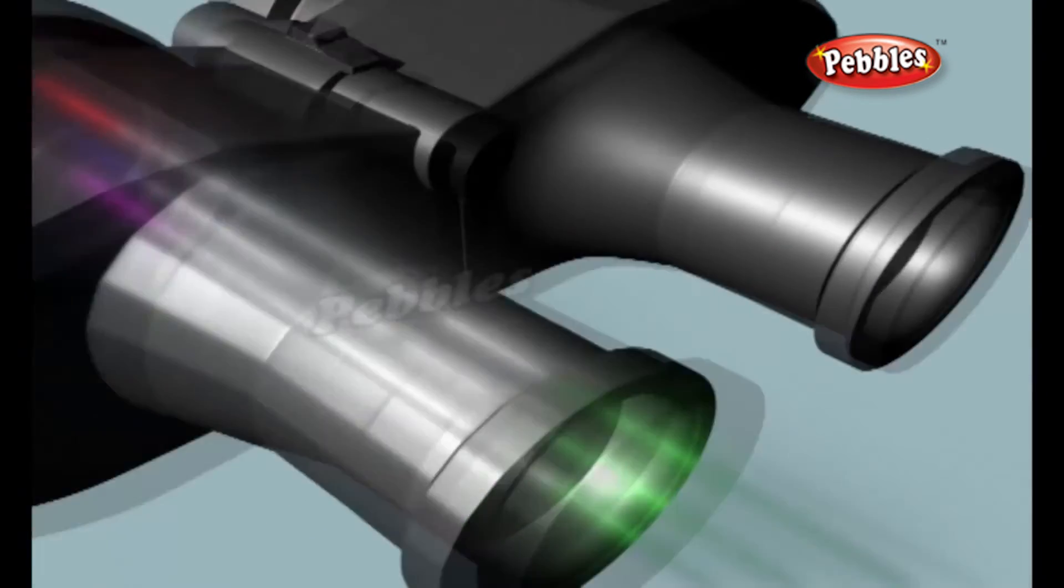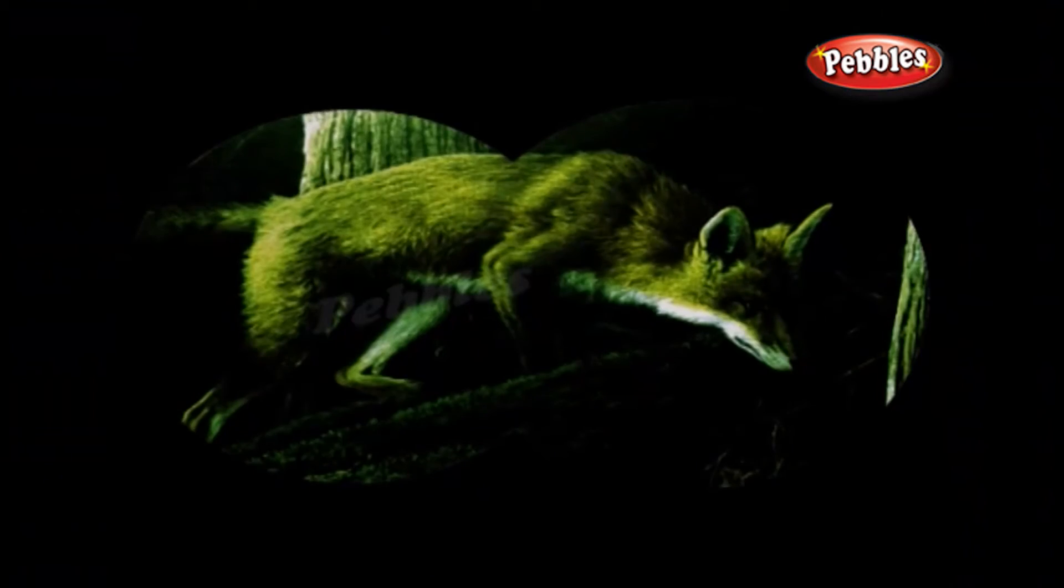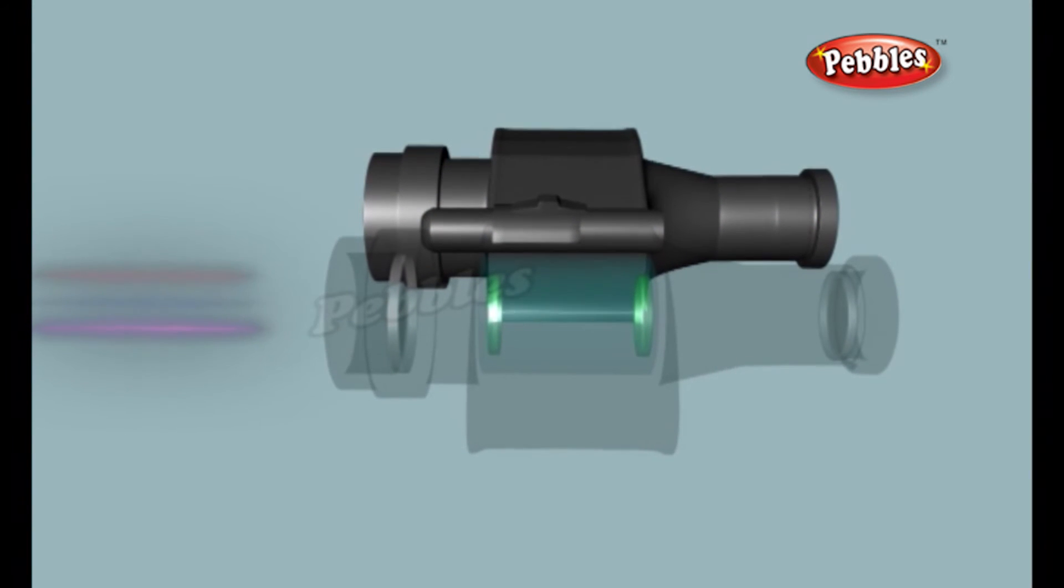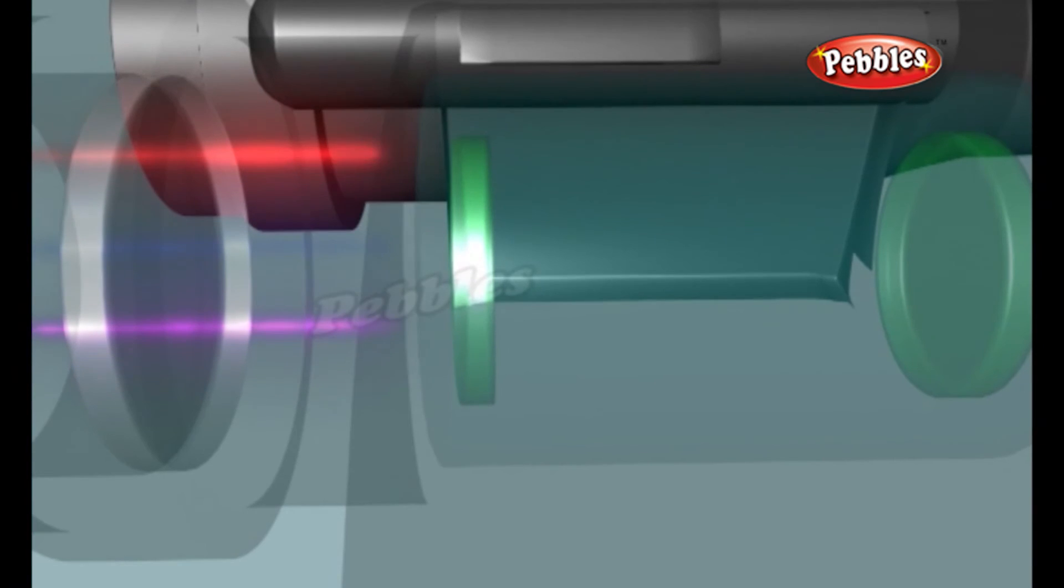So why does everything look green through night vision goggles? The incoming photons carry light of all colours. But when they are converted to electrons, there's no way to preserve that information. Effectively, the incoming coloured light is turned into black and white.